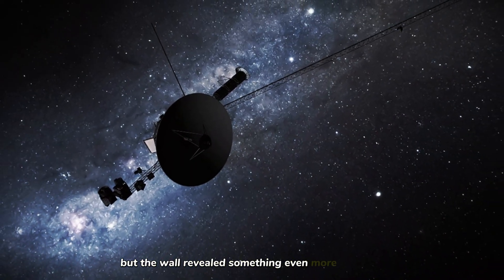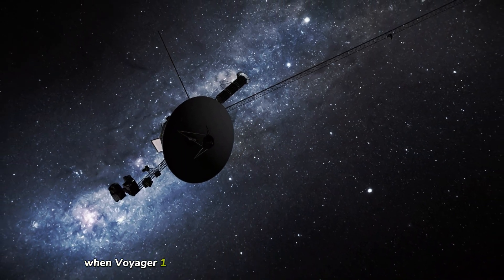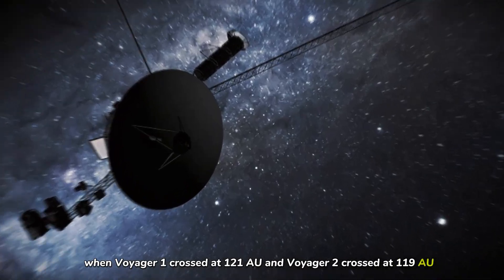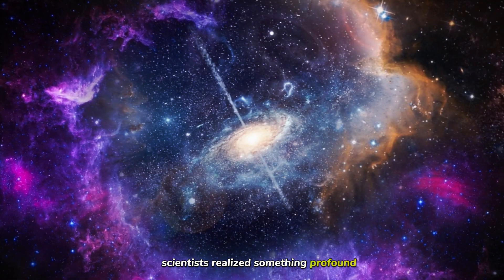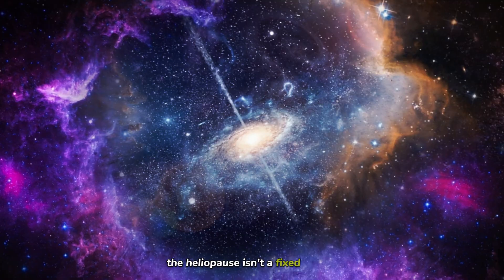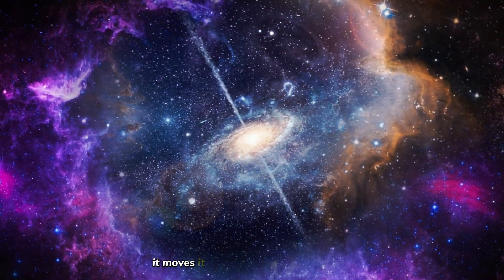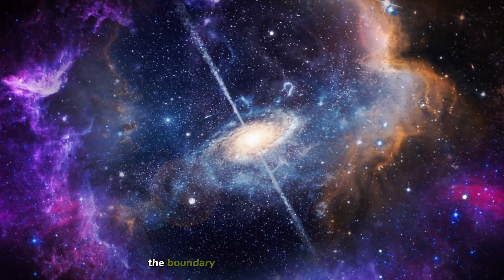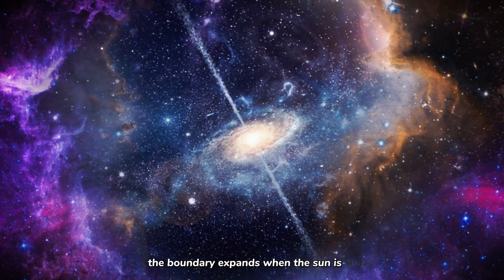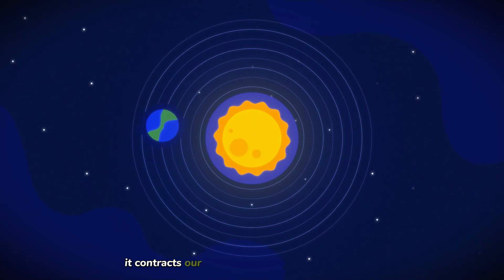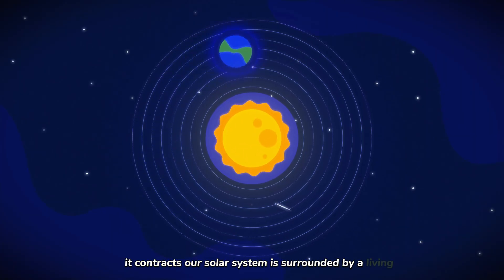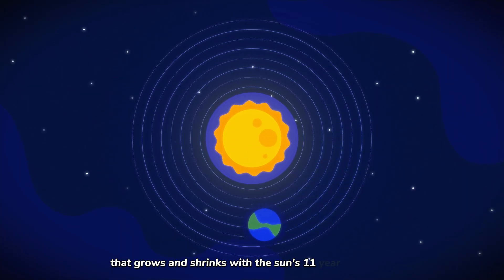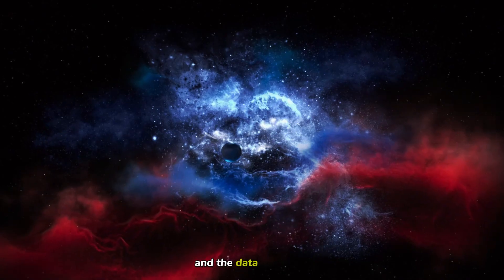But the wall revealed something even more unexpected. When Voyager 1 crossed at 121 AU and Voyager 2 crossed at 119 AU, scientists realized something profound. The heliopause isn't a fixed boundary. It moves. It breathes. When the sun is active, blasting out more solar wind, the boundary expands. When the sun is quiet, it contracts. Our solar system is surrounded by a living, pulsing shield that grows and shrinks with the sun's 11-year activity cycle. And the data got stranger.